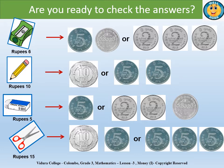And finally, the last item — a pair of scissors which is fifteen rupees. You can represent it either using a ten rupee coin and a five rupee coin, or using three five rupee coins. Did you get all the answers correct? Well done!